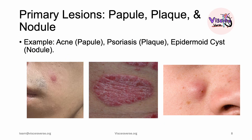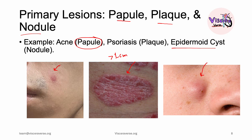Looking at some examples: acne here is a very typical example of a papule. Psoriasis, as shown here, is an example of a plaque — it is elevated, palpable, and definitely more than one centimeter. An epidermoid cyst is an example of a nodule. If you compare it to a papule, it feels very deep and is more than one centimeter, but it's also very deep in the skin — you can see how much deeper it looks compared to a papule.